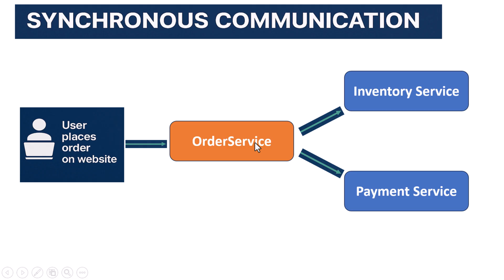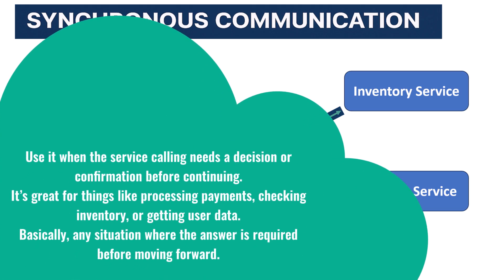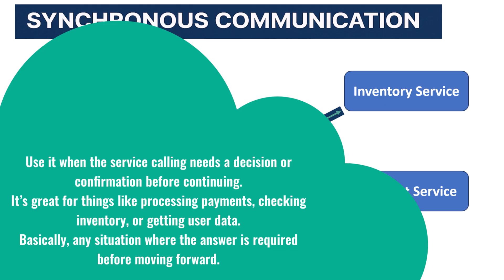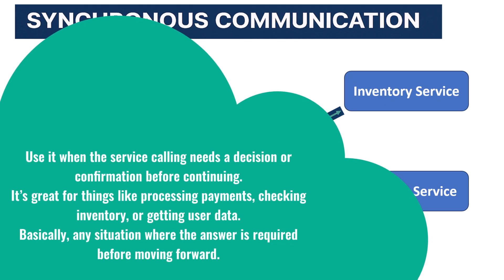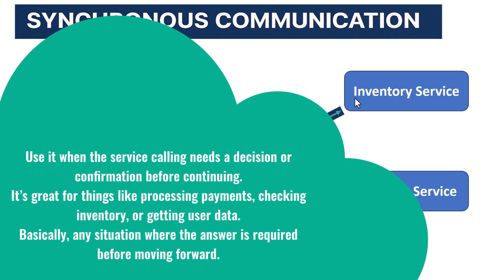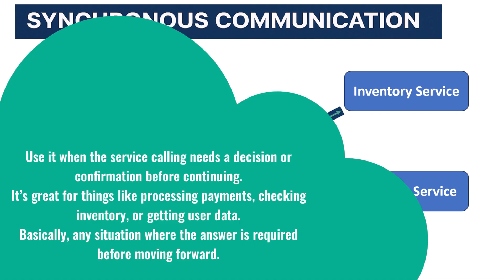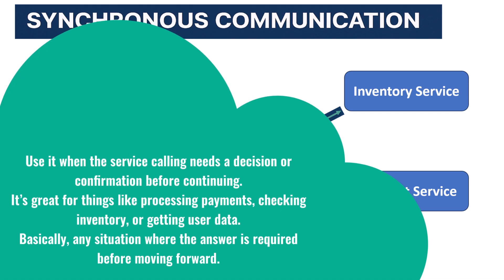But it's also straightforward. You get immediate results. You can validate outcomes in one flow, and it's easy to trace because each call follows a single path. Use synchronous communication when the service calling needs a decision or confirmation before continuing. It's great for things like processing payments, checking inventory, or getting user data — basically any situation where the answer is required before moving forward.